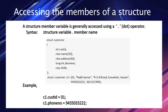A structure member variable is generally accessed using the dot operator. The syntax is: structure variable, then dot operator, then the member name. For example, 'c1.customerid = 01' assigns 01 to the customer ID of customer c1. Similarly, 'c1.phonenumber = 9435033221' assigns that phone number to customer c1. Thus we can initialize members of a structure variable using the dot operator.